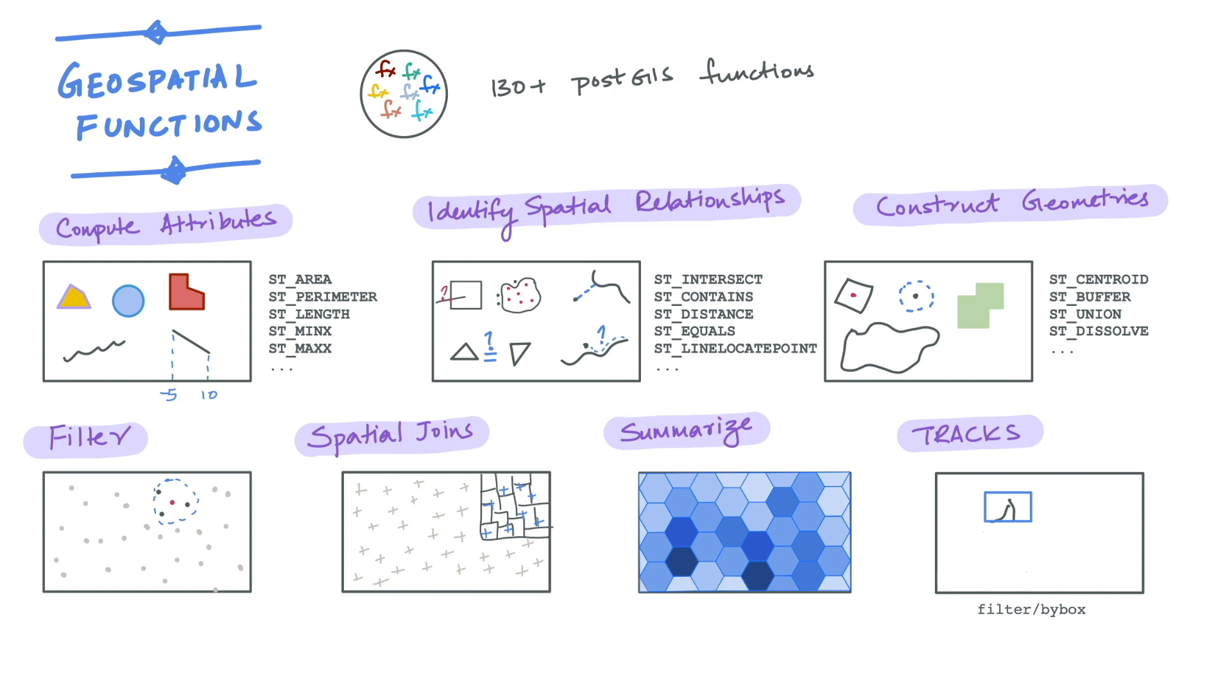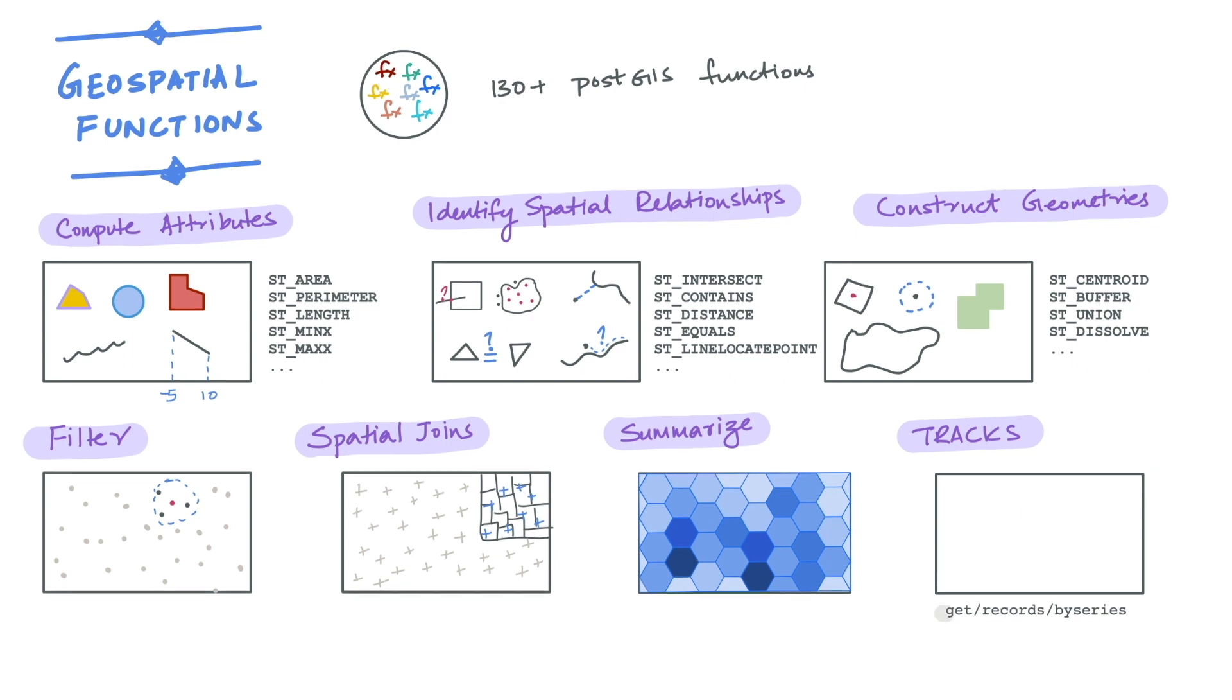This is where we can use the get records by series endpoint, which takes a filtered view as its input and retrieves the entire set of associated data for that track from the original track table.